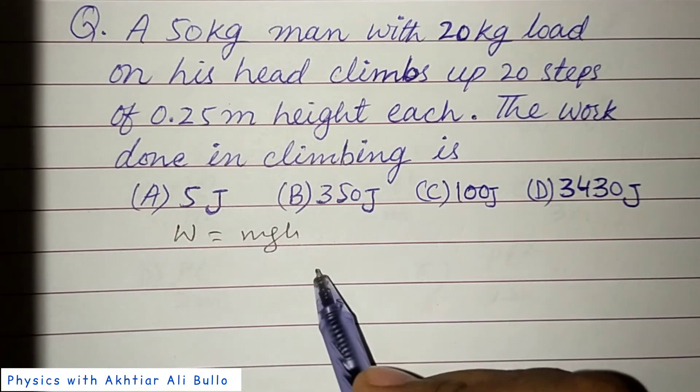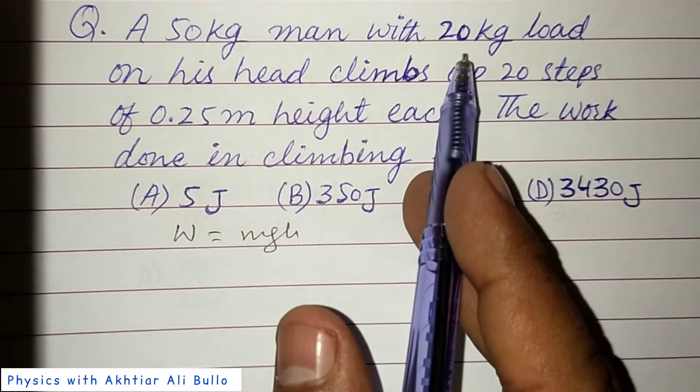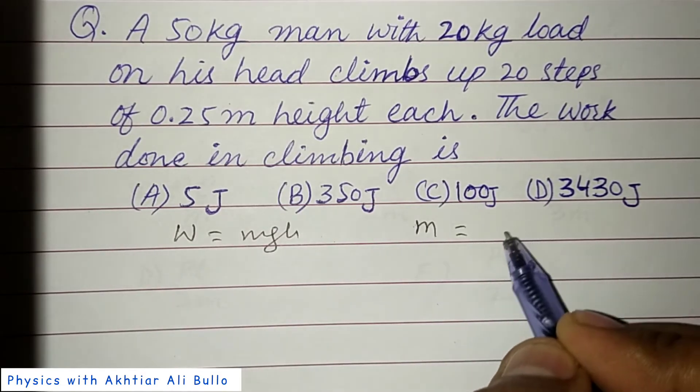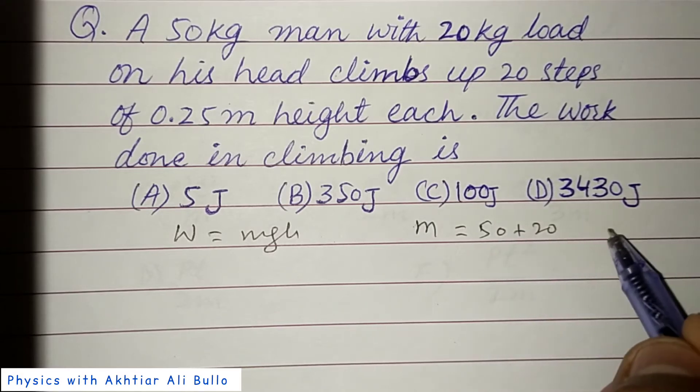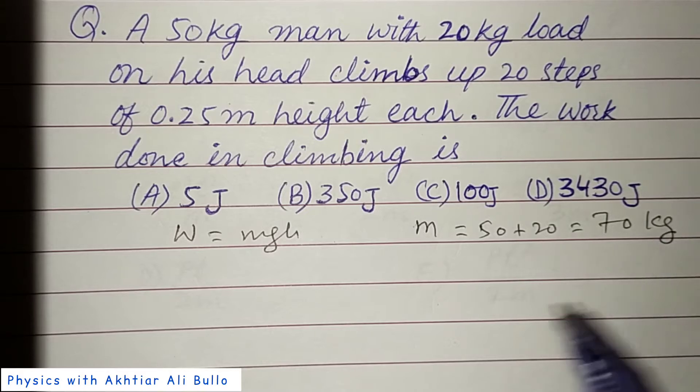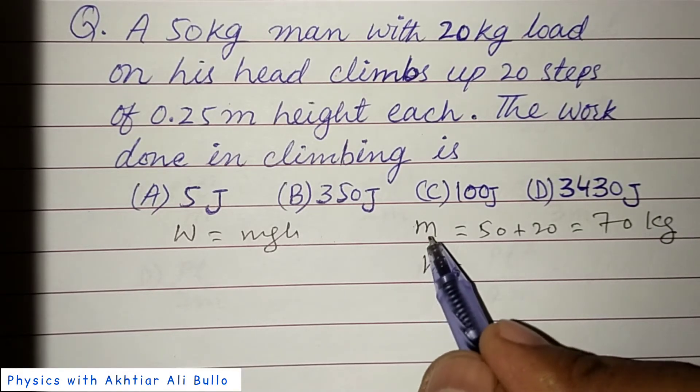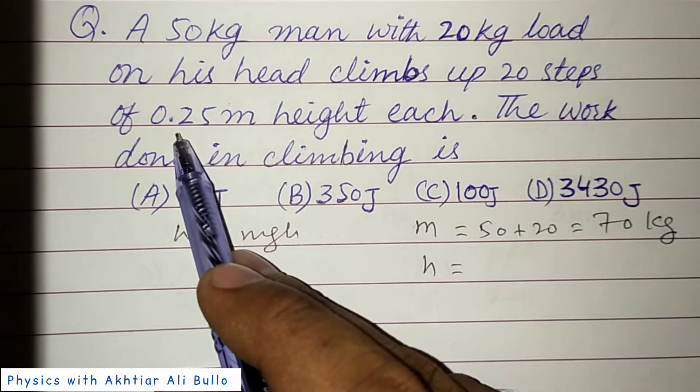First of all, we will find total mass and total height. Total mass is equal to 50 plus 20, so it will be 70 kg.